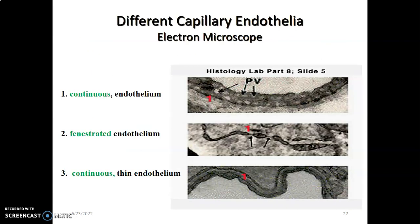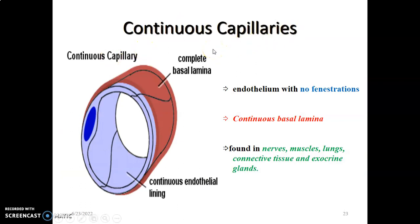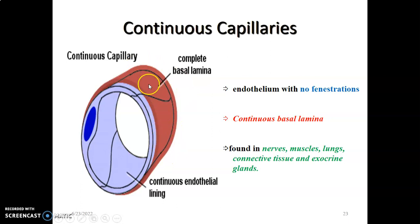Continuous capillaries have continuous endothelium, and fenestrated capillaries have fenestrated endothelium. Looking at the diagram, the endothelium — shown in blue — represents simple squamous endothelial cells lying on a basal lamina shown in pink. The continuous capillaries have a continuous endothelial lining with no fenestrations, and the basal lamina is also continuous with no openings or perforations.